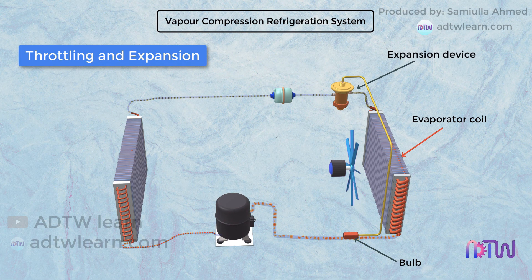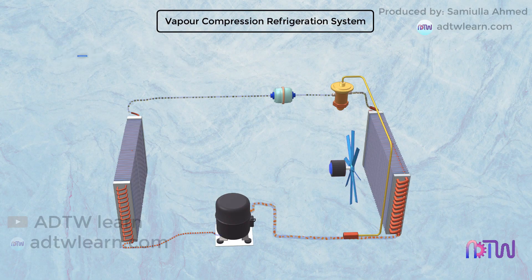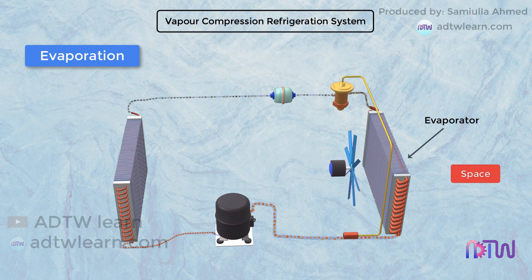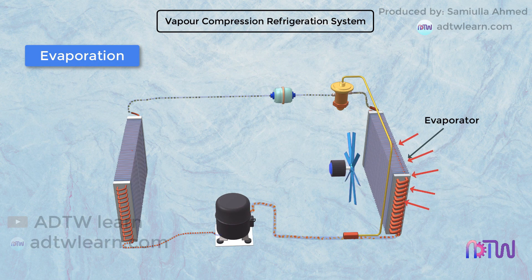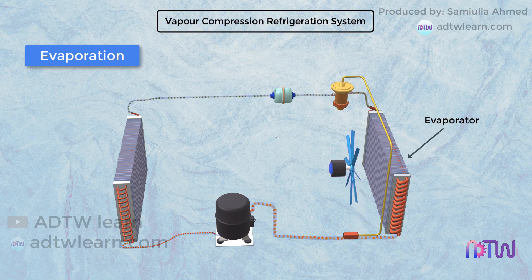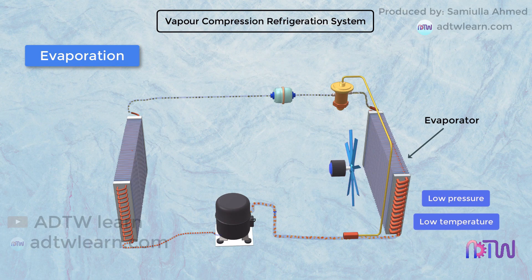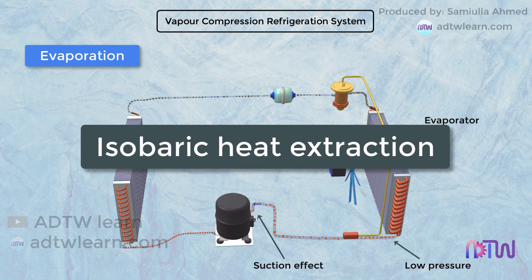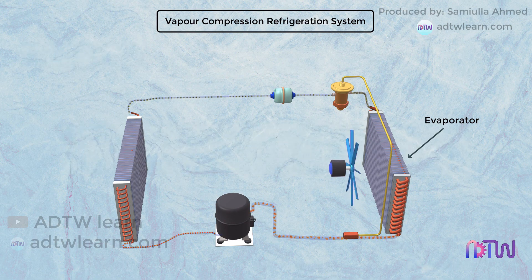The refrigerant entering the evaporator is at a lower temperature than the space to be cooled. Therefore, it evaporates and absorbs heat from the closed chamber inside which the evaporator coil is placed. Heat extraction from the space happens at low pressure and temperature. The compressor suction effect helps in maintaining the low pressure at the evaporator side. This step is called isobaric heat extraction.